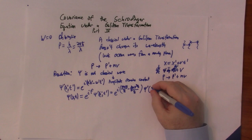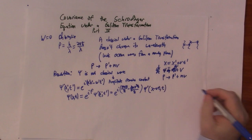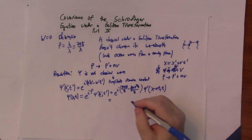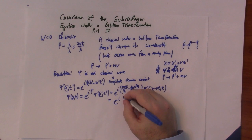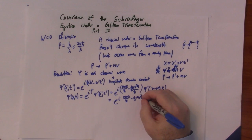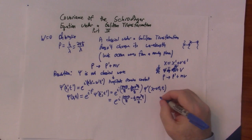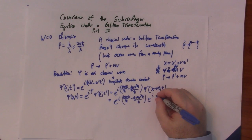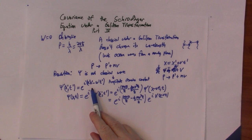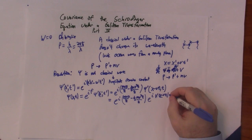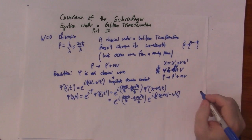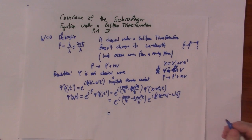I can substitute x prime, that's just x minus vt. And t is t. So this is equal to e to the i, mvx over h bar, minus 1 half mv squared t over h bar, times e to the i, k prime, k prime times x minus vt, using the form that we gave of psi prime, x prime, comma t prime, minus omega prime t.